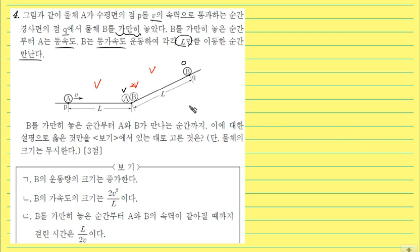이렇게 빨리 우리가 해결하면 되는 겁니다. 그럼 ㄱ부터 볼게요. B의 운동량의 크기를 물어봤는데 질량은 변하지 않지만 B는 속력이 점점 빨라지죠? 그렇기 때문에 운동량은 증가한다. 맞는 내용이 되겠고요.